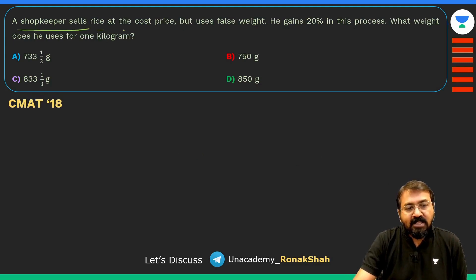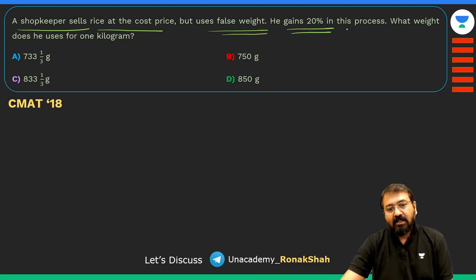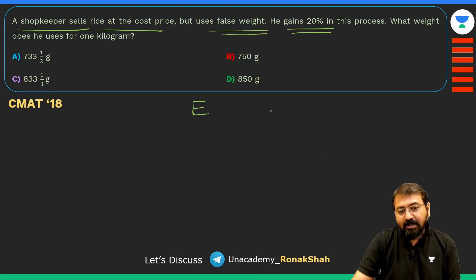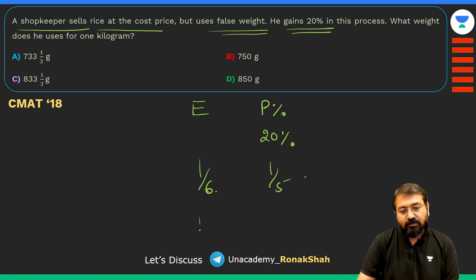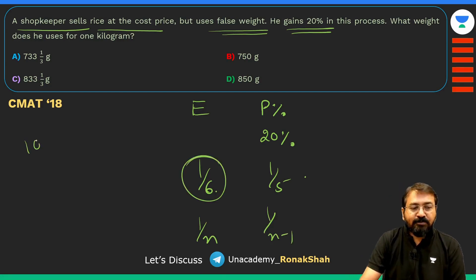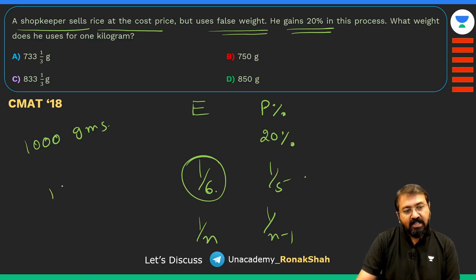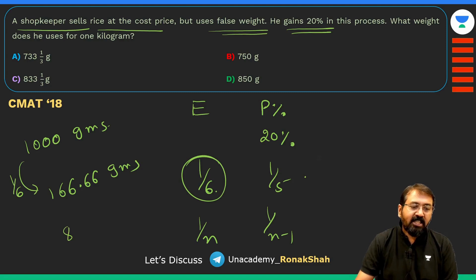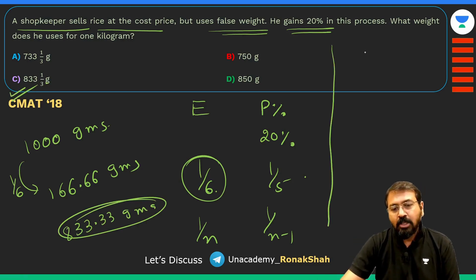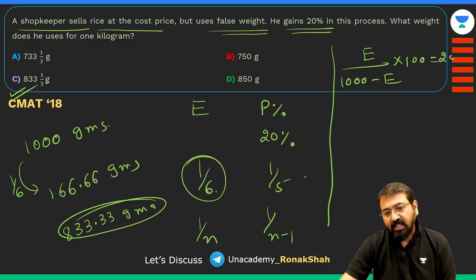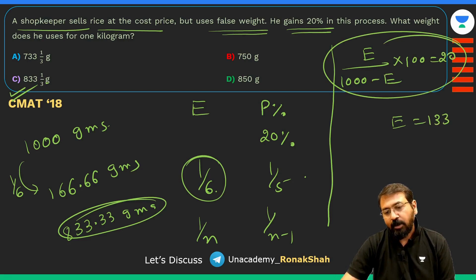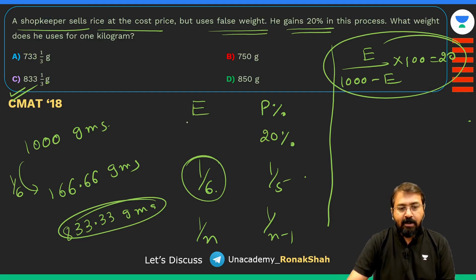A shopkeeper sells rice at cost price but uses a false weight and gains 20%. What weight does he use for 1 kg? Since profit is 20%, that is 1/5, the error is 1/6 of the true value. For 1,000 grams, the error = 1,000 ÷ 6 ≈ 166.67 grams, so he gives only about 833.33 grams to the customer. Using the standard formula: error ÷ (true value − error) × 100 = 20%, solving gives error ≈ 166.67 grams — so just remember this shortcut relation.